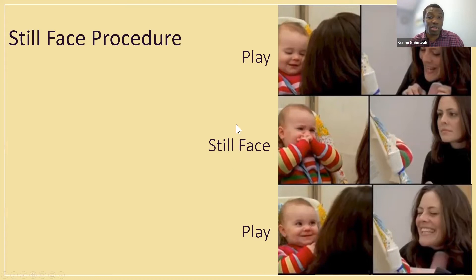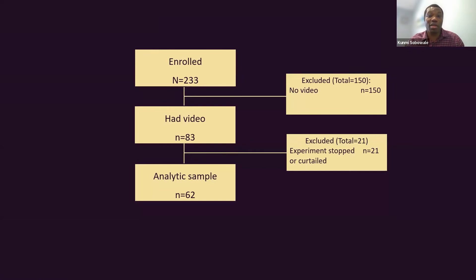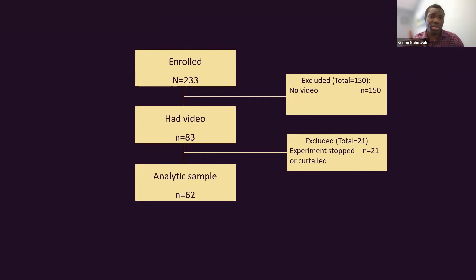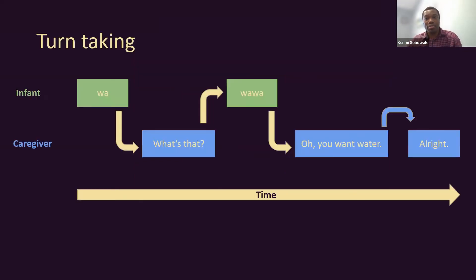To give you a sense of the experiment itself: you may be familiar with the still face paradigm. It's a lab-based stressful interaction with three stages. First, a play stage where the mother and child interact for around two minutes. Then a still face stage where the caregiver puts on a blank, stone-wall face and doesn't interact with the child — this usually leads the child to get upset. Then a reunion phase where the caregiver and child can interact again. I focused on these three stages, each about two minutes, so six minutes total. The study enrolled 233 women; 83 had in-person video, and after excluding some where stages were curtailed, I had an analytic sample of 62 dyads.